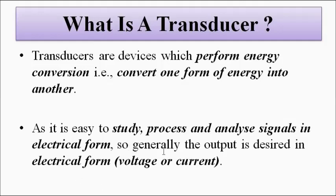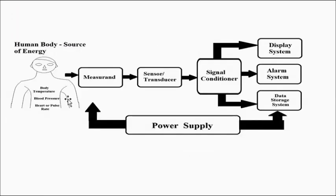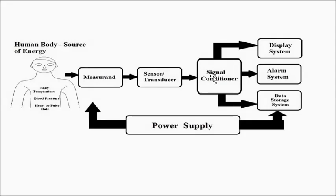The output is in voltage or current form so that it is easier to process, study, analyze, and use for diagnostic purposes. This is the layout of a basic biomedical measurement system. We have the body parameters to be measured — body temperature, pressure, heart rate, pulse rate, respiration rate, blood flow rate, anything. It is measured with suitably placed transducers and sensors. The output of the sensor or transducer is given to the signal conditioner block, which performs amplification, filtering of noise, frequency response adjustment, providing power to passive transducers, and linearization of the output.